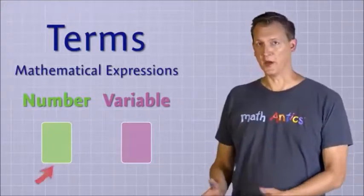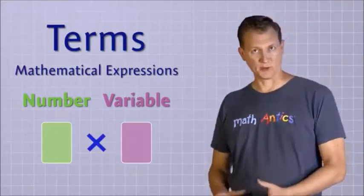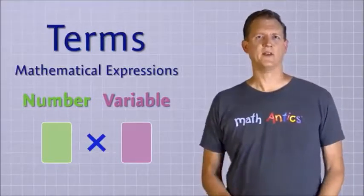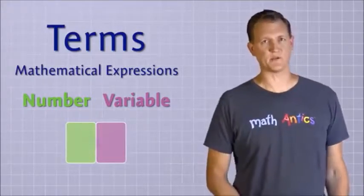In a term, the number part and the variable part are multiplied together. But since multiplication is implied in algebra, the two parts of a term are usually written right next to each other with no times symbol between them.